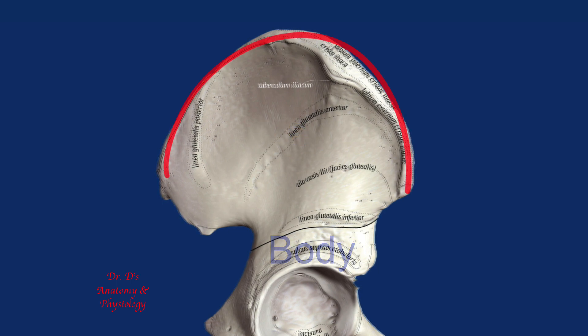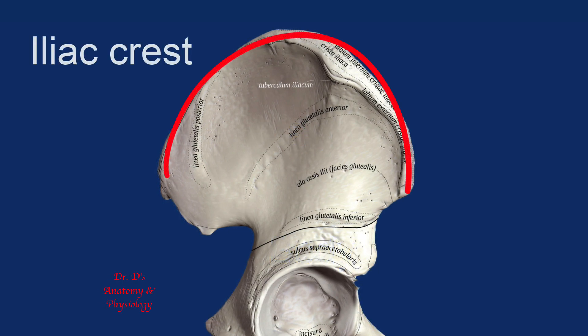The narrow superior edge of the ileum is called the iliac crest. Muscles of the abdominal wall and fascia attach to the iliac crest.